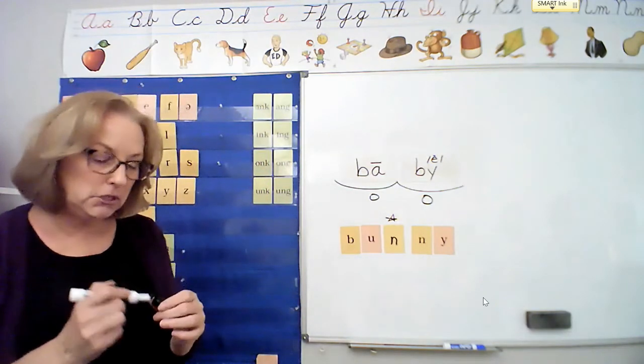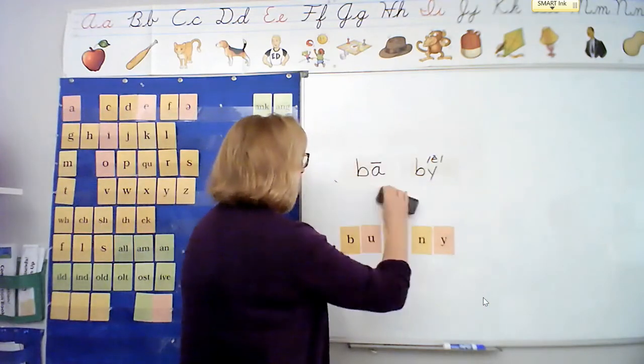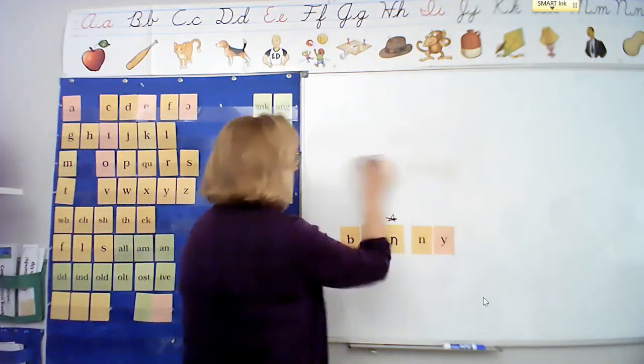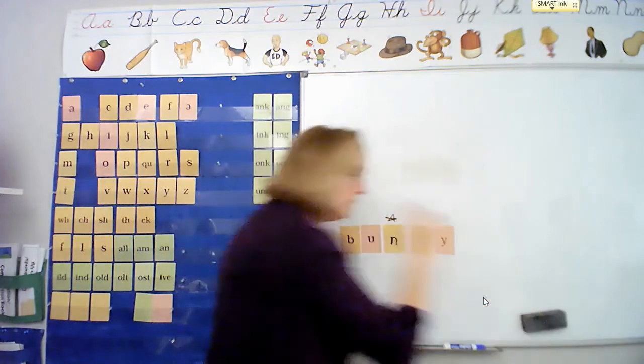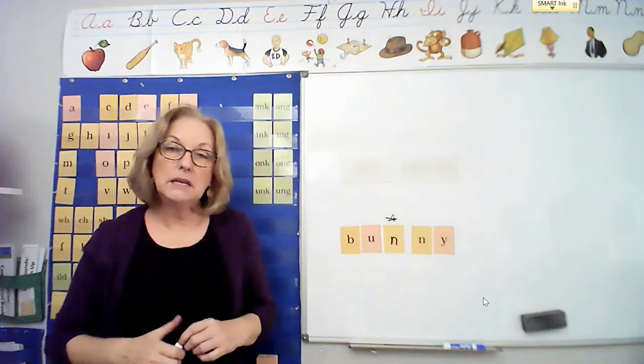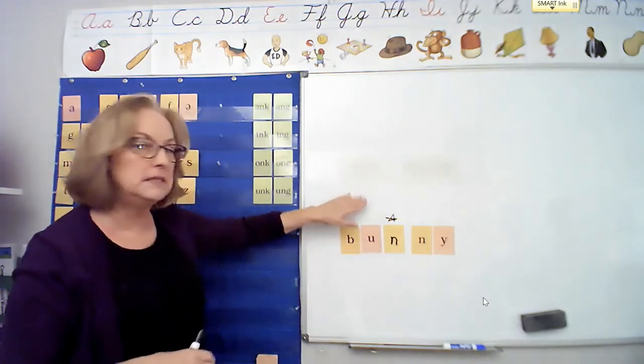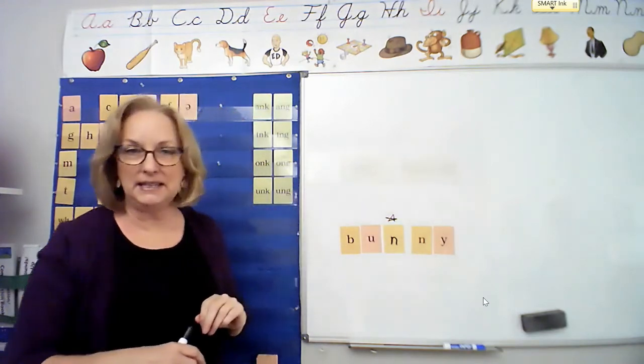So even though we don't hear both n's more clearly, we need to have the double consonant. We need to have that bonus in there for the word bunny. Now I'll give you a word to try on your frames, and I'll leave bunny up there to remind you. Listen and see if you hear a short vowel sound in the first syllable.